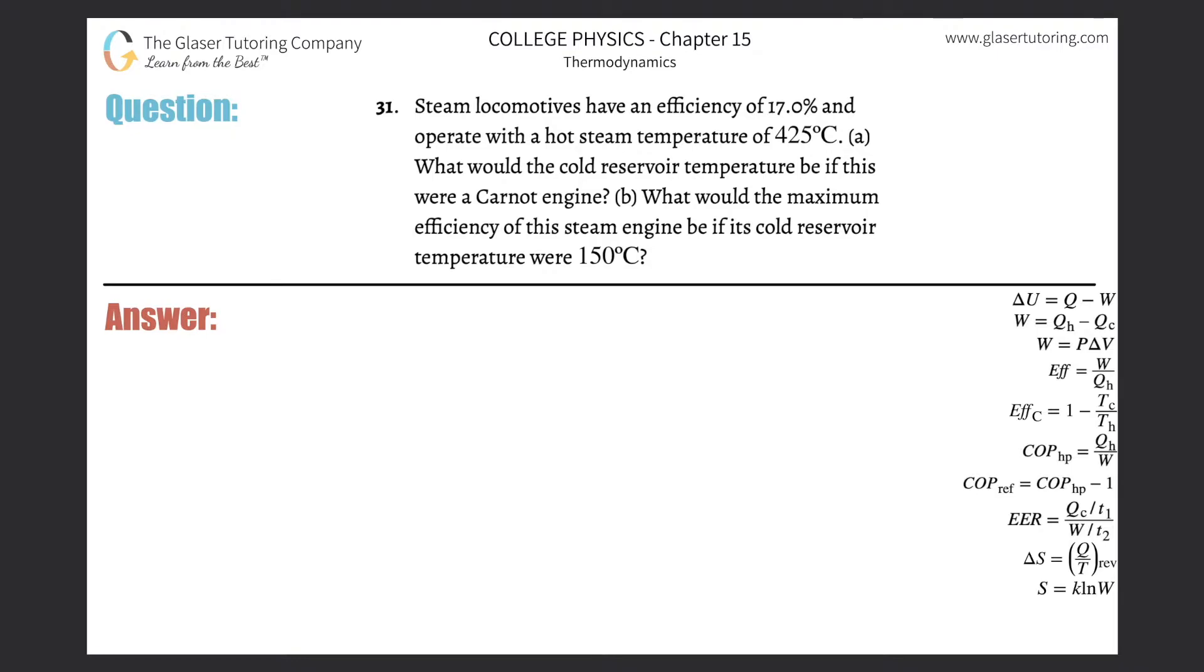Number 31. Steam locomotives have an efficiency of 70% and operate with a hot steam temperature of 425 degrees Celsius. Letter A: What would the cold reservoir temperature be if this were a Carnot engine?